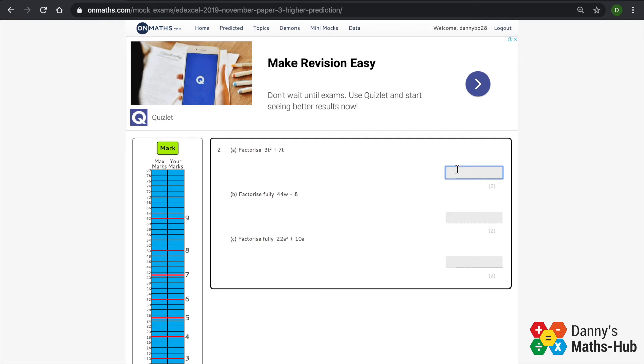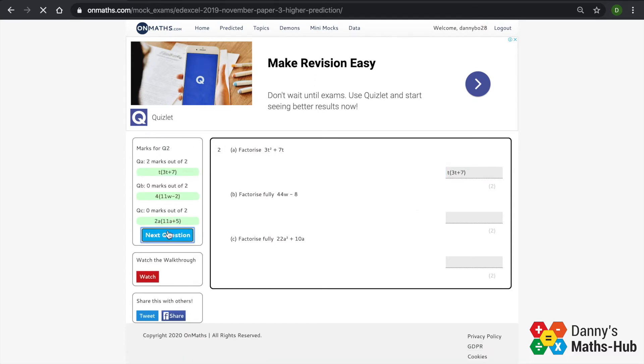Now they're not all multiple choice. In some cases, you may have to type. So when we want to factorize this out, we simply do our factorization and we actually have to type in our answers here, and then we click mark.